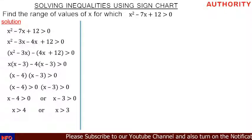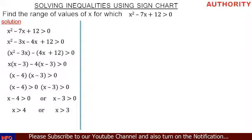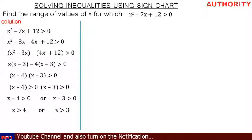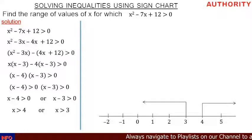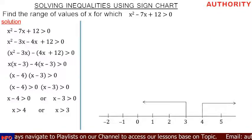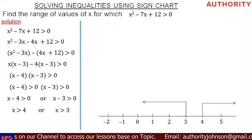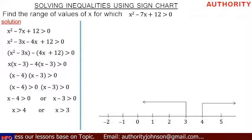We have x greater than 4 or x greater than 3. We ask ourselves: which of them is bigger? Clearly 4 is bigger than 3. Let's draw a number line: minus 2, minus 1, 0, 1, 2, 3, 4, 5. Since 4 is bigger, we draw a line up from 4 and point the arrow forward. For 3, we draw an arrow up and then downward.